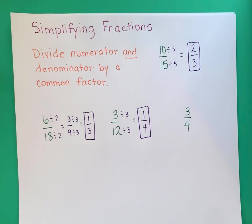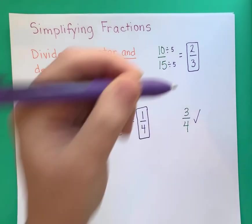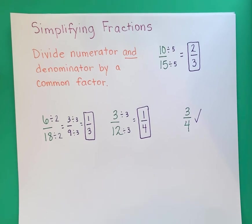My last example is 3 fourths. I included this because you cannot always simplify a fraction — it might already be in simplest form. For 3, the only things I could divide by are 3 or 1. We don't want to divide by 1 since that gives the same thing. If I divide by 3, I'd have to be able to divide 4 by 3, but 3 does not go into 4 evenly. I could divide 4 by 2 or 4, but neither goes into 3 evenly. So this is already in simplest form.